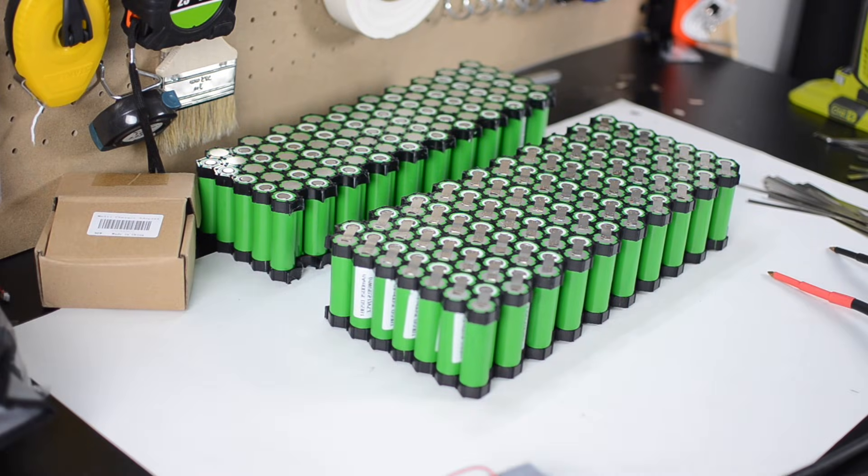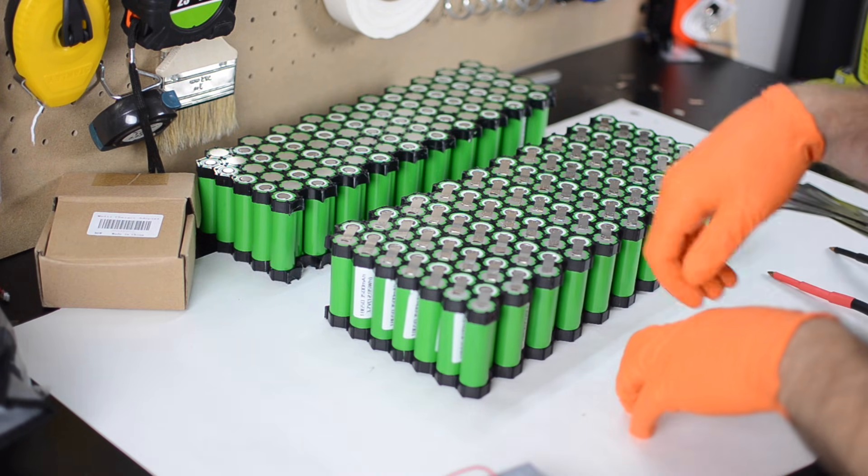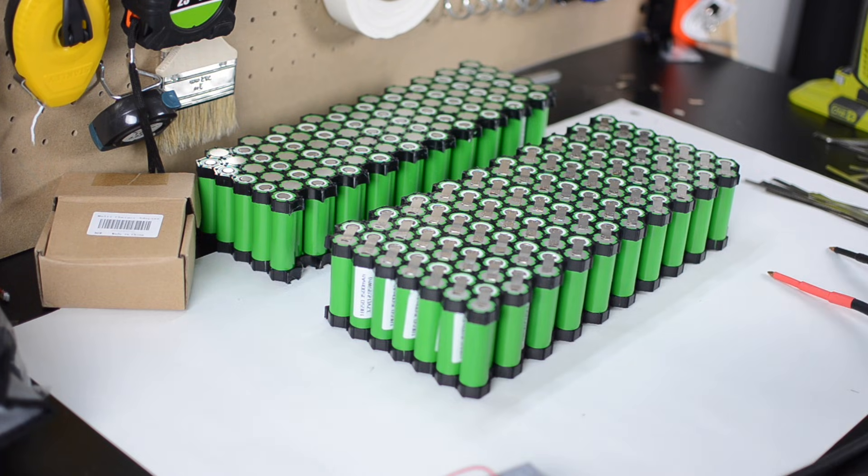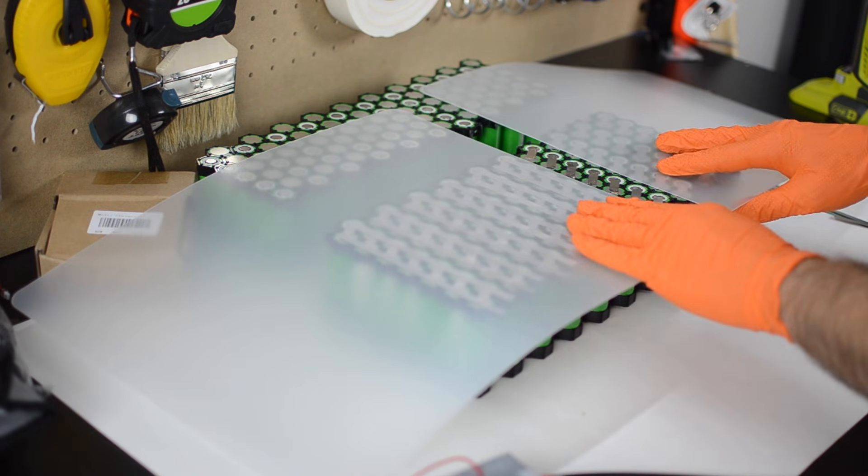So now through the magic of video editing, I've skipped forward in time, and I've finished all of the series welds on this side of the block. So now I'm going to go back and do all of the parallel welds, which connect the rows together, and create single modules of cells for each row. And just a quick note, while I'm working in the middle of the pack, I like to use two sheets of plastic to cover both sides of the pack.